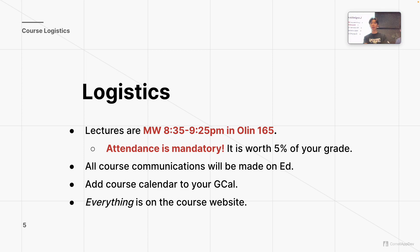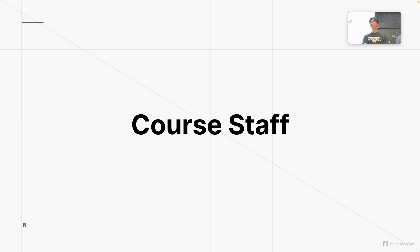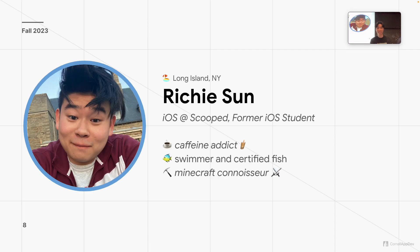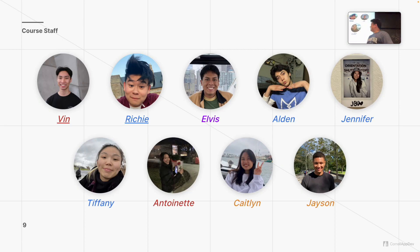Let me introduce us. That's me — this is my second semester on App Dev. I'm working on Volume this semester and I'm from Dallas, Texas. Hi everyone, I'll be co-instructing the course with Vin. My name is Richie, I'm a CS major also minoring in data science. This is my third semester in App Dev and I'm currently working on Scooped, our newest app. I'm from Long Island, New York.